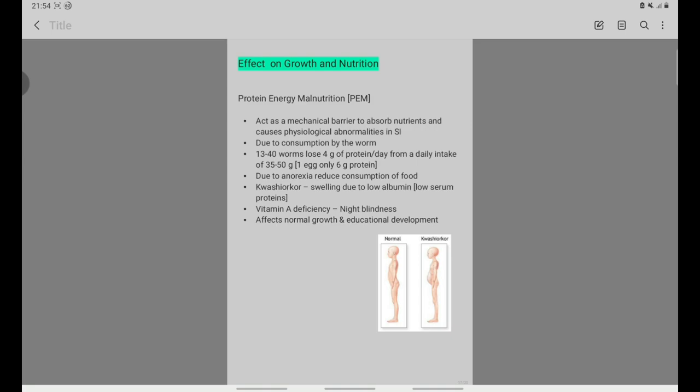Worms cause physiological abnormalities in the small intestine. They consume protein, causing daily protein intake loss of about 4 grams. This protein loss reduces serum protein levels and albumin levels, leading to swelling of the abdomen.